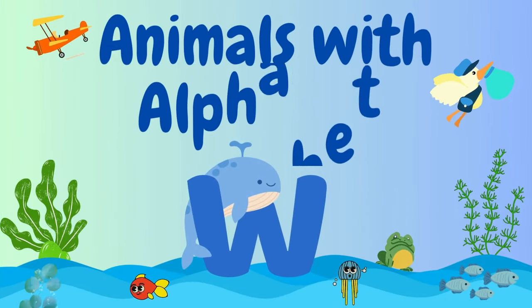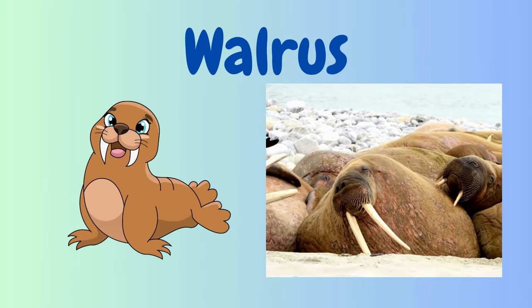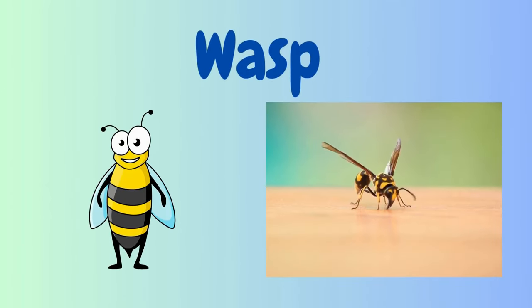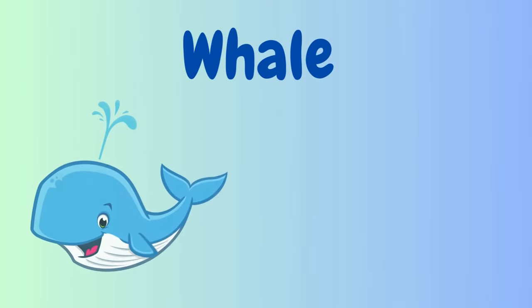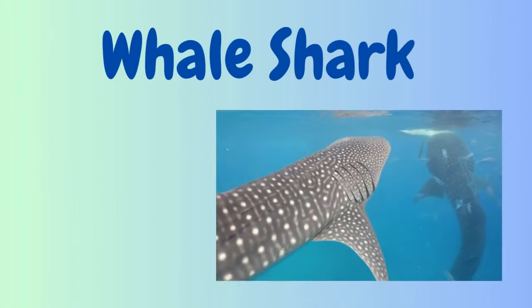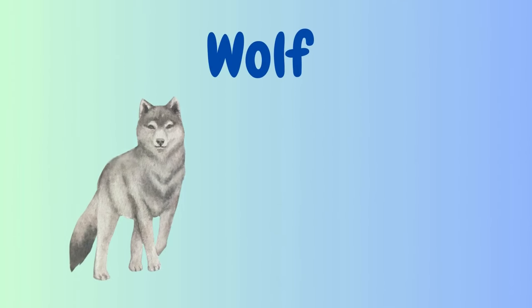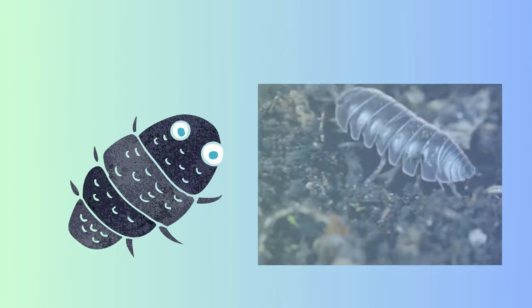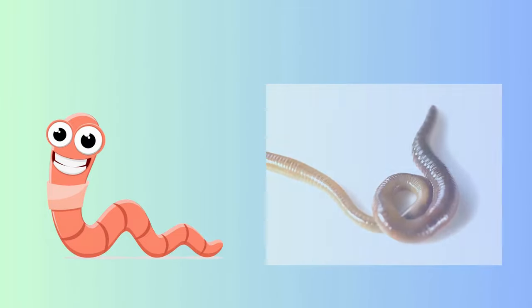Animals with Alphabet W. Wallaby. Walrus. Warthog. Wasp. Weasel. Whale. Whale Shark. White Tiger. Wolf. Wombat. Woodlouse. Woodpecker. Worm. Wren.